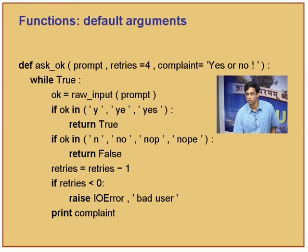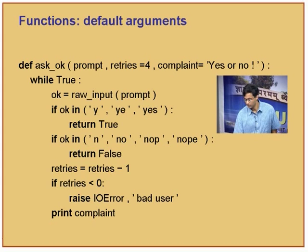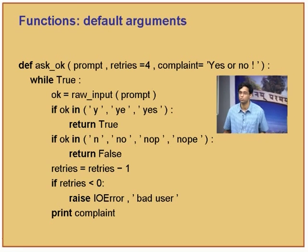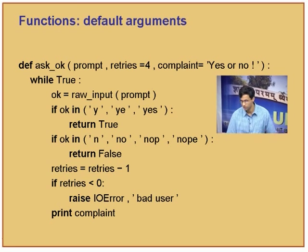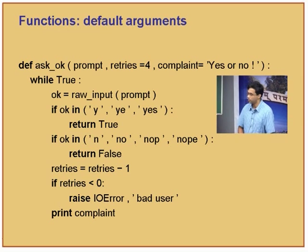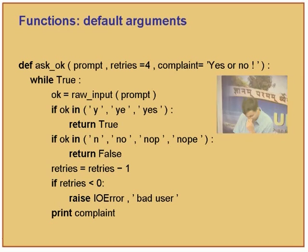I am decrementing the retries. If retries is less than 0, I give the user a message saying bad user — using an exception, which we will do later. And print a complaint. So if the user did not enter yes or no, it will say yes or no. The retries is by default 4.